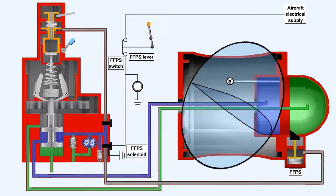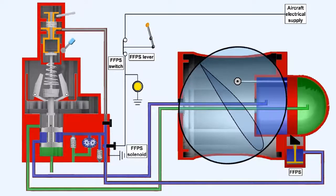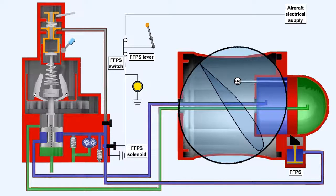The propeller control unit incorporates a flight fine pitch stop solenoid which controls the supply of high pressure oil to a flight fine pitch stop mechanism in the propeller pitch change cylinder. When the solenoid is energized, oil pressure is directed to withdraw the flight fine pitch stop, thereby allowing the pitch change piston to move below the flight fine position and into the beta range. When the solenoid is de-energized, oil pressure is removed and the flight fine pitch stop is engaged by spring pressure.